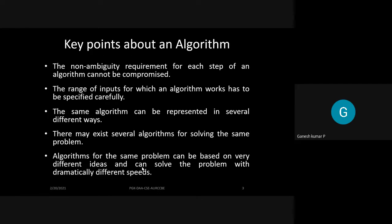Key points about an algorithm: First, the non-ambiguity requirement — for each step of an algorithm, the requirement cannot be compromised. Each algorithmic instruction should be free from ambiguity.